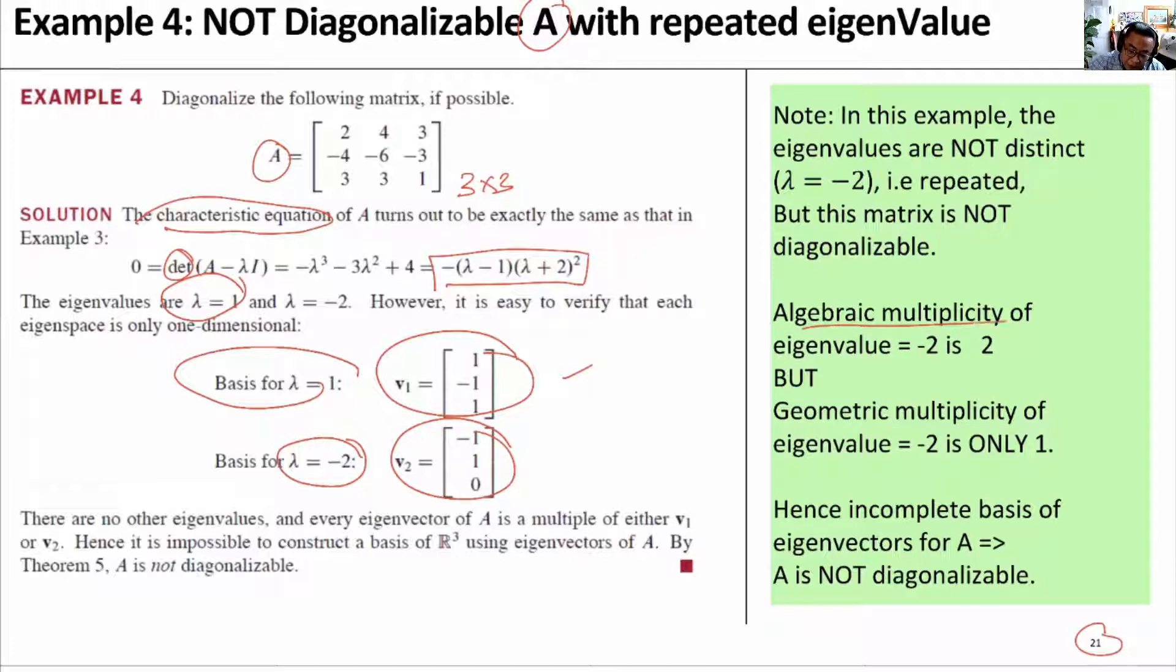So, the algebraic multiplicity for the eigenvalue of minus 2 is 2, but the geometric multiplicity—the number of vectors in the eigenspace for lambda equals minus 2—is only 1.